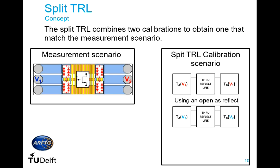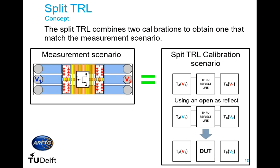Our approach is to use what we call a split TRL. If we have a measurement scenario where we have V1 at port one and V2 at port two, we can perform two different calibrations — one using V1 and one using V2 on the test fixture — using an open as reflect. Then combining the two error boxes related to the voltage on each port, we can actually match the measurement scenario.